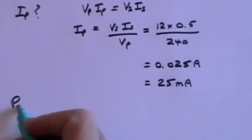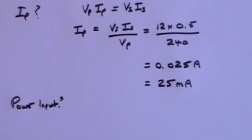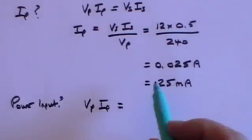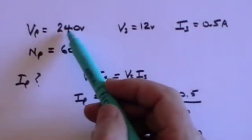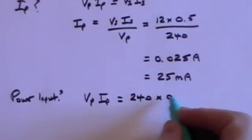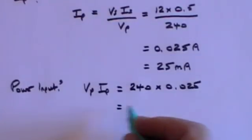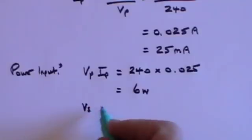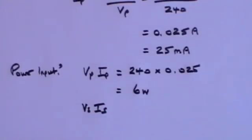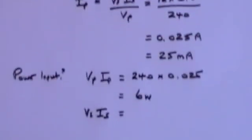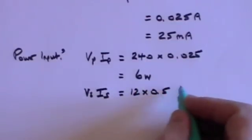Question two: what is the power input? Since power input equals power output, I can do it either way. The power input is Vp times Ip: 240 volts times 0.025 amps equals 6 watts. Let's check: the power output is Vs times Is — 12 volts times 0.5 amps — which is also 6 watts. It works both ways.